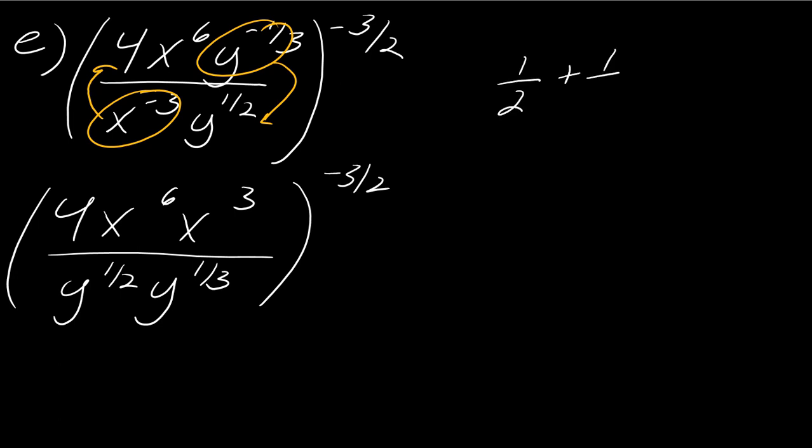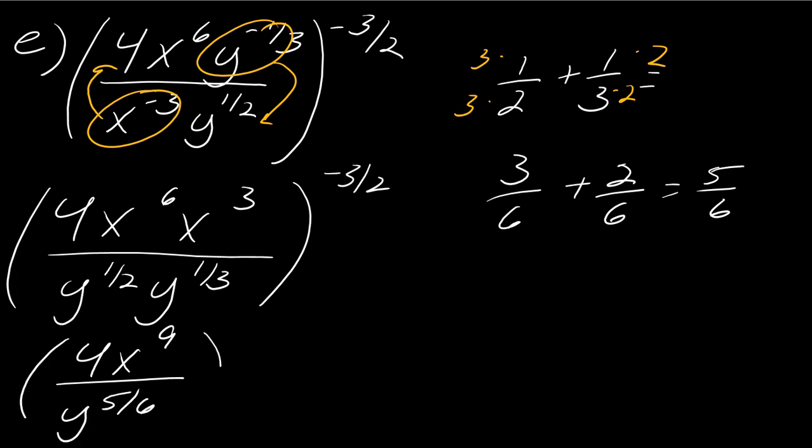And then, so 1 half plus 1 third. Well, what I'm going to do is I'm going to multiply the first one by 3, the second one by 2. So this will be 3 over 6 plus 2 over 6. So this is 5, 6. Okay, so this becomes 4x to the 9th, y to the 5 over 6, and then all of that to the negative 3 halves.